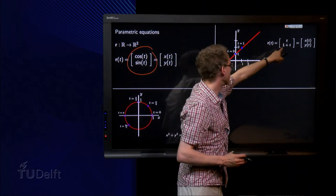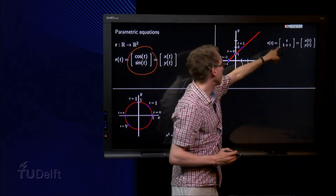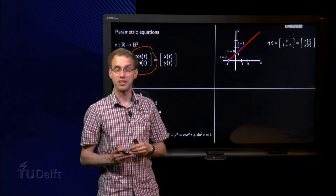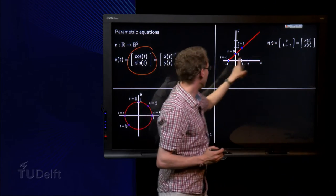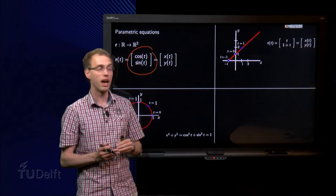t equals 0, we get (0,1) over there. t equals 1, we get (1,2) over here. And t equals -1, we get (-1,0) over there. And you see already something happening.